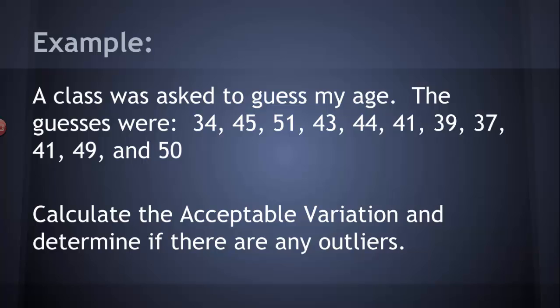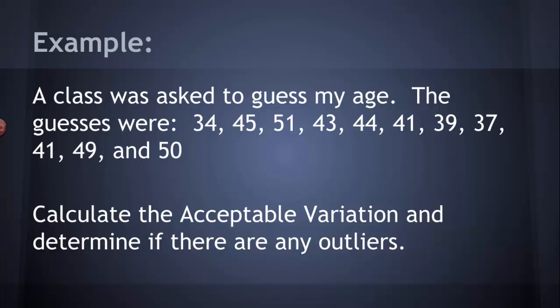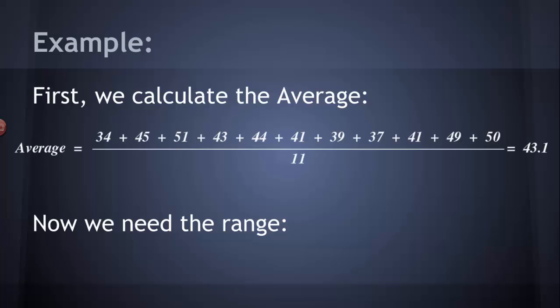Now we're going to calculate the acceptable variation and see if there are any outliers in this data set. So the first thing we want to do is figure out the average. And so in order to calculate the average, we add all the terms up and we divide by the total number of terms. There are 11 terms total. Divide by 11, add up and divide by 11, we get 43.1. That's the average guess, 43.1.